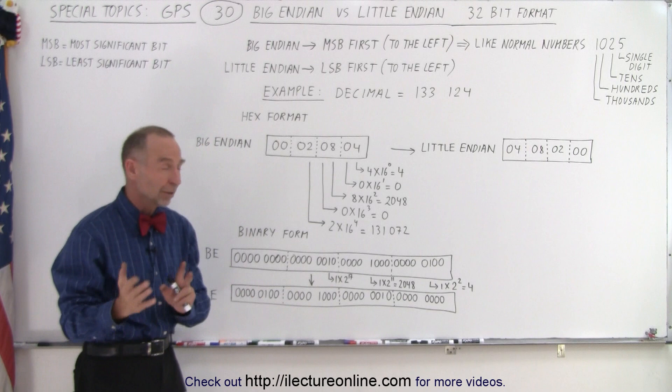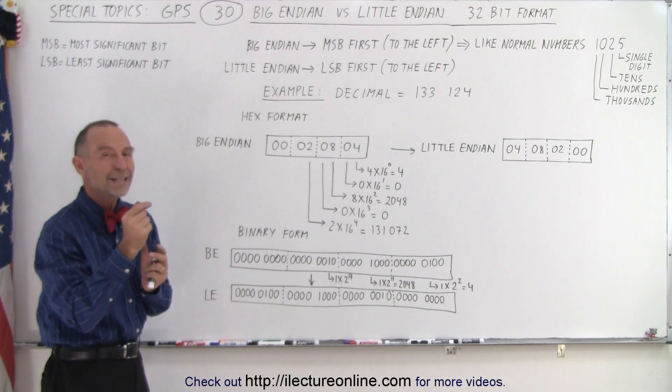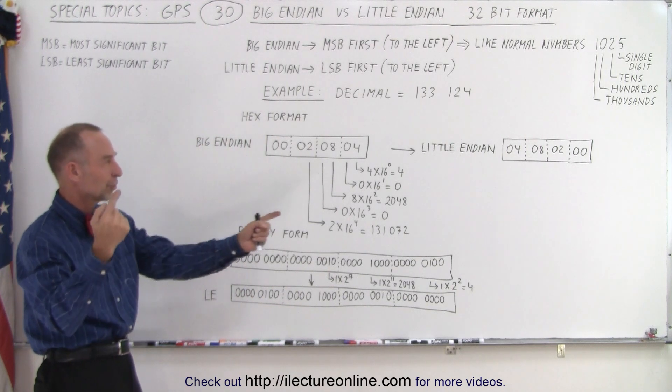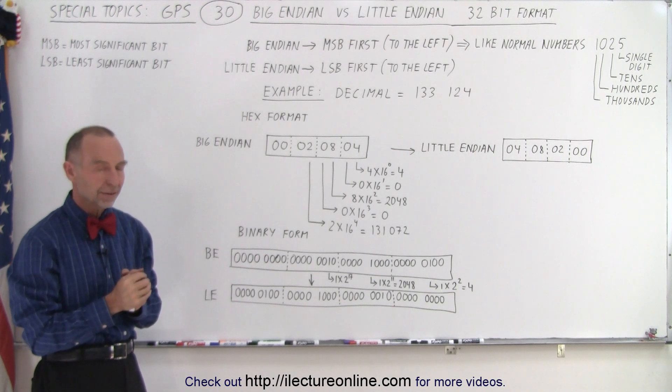So notice that whenever we convert from big to little Endian we always move eight bits at a time. So it's not just simply a turning around of all the bits, we simply move eight bits at a time.